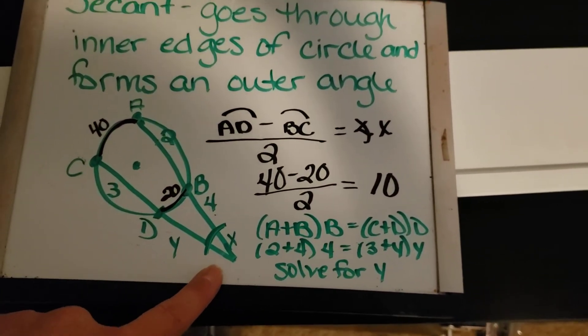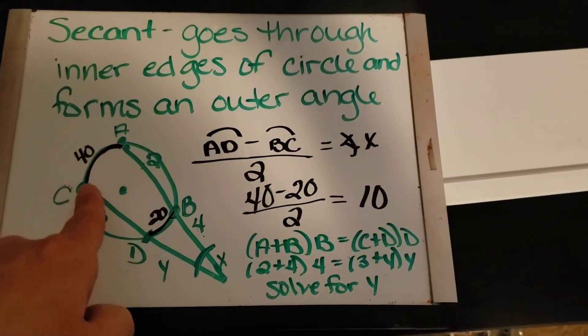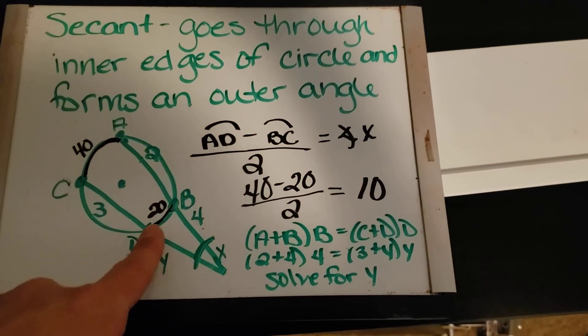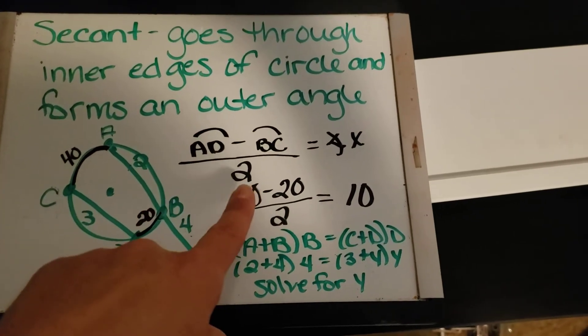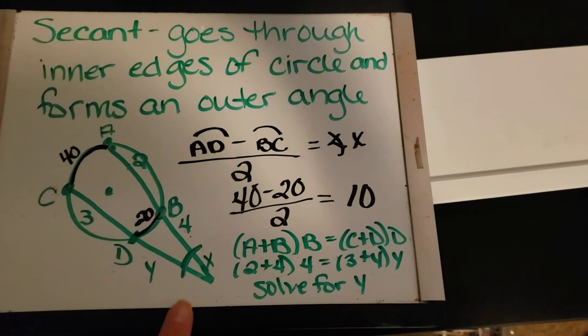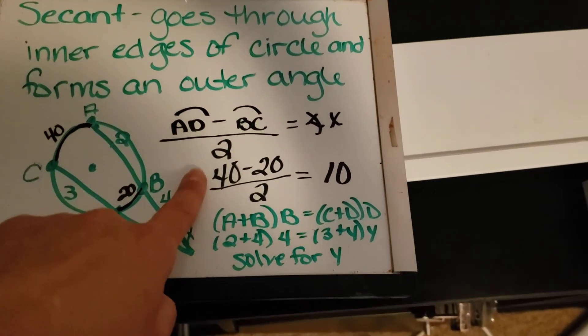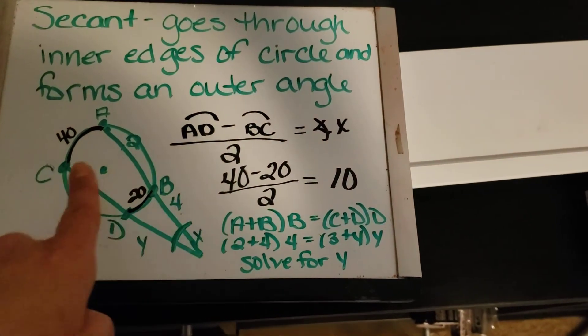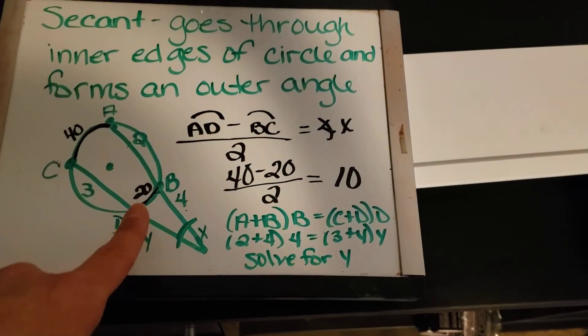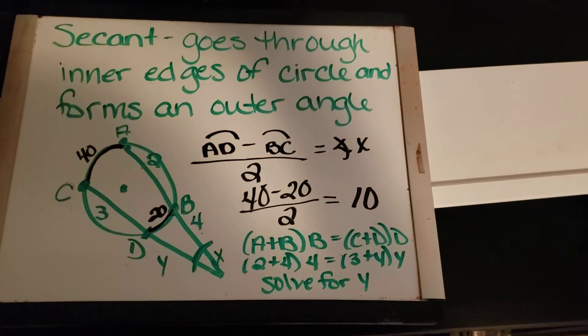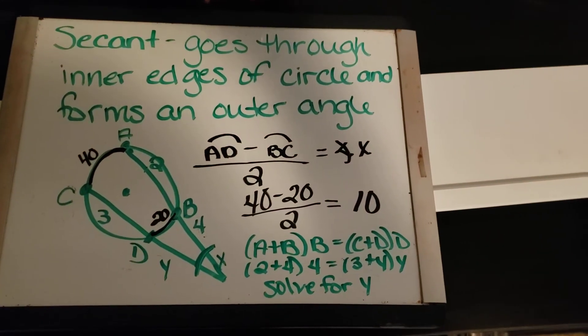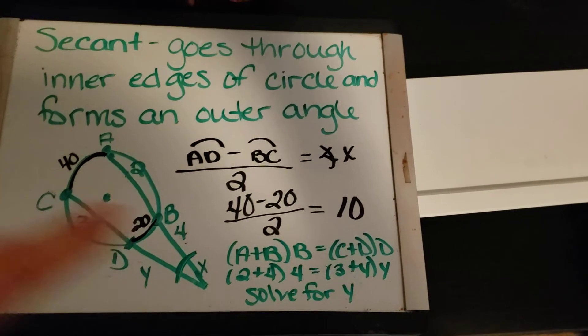Well to find out angle X, I take the biggest arc minus the smallest arc and I divide it by 2 to get the measure of that outer angle. So 40 which is my bigger one minus 20 which is my smaller one divided by 2. Well 40 minus 20 is 20. 20 divided by 2 is 10.